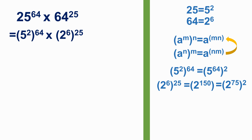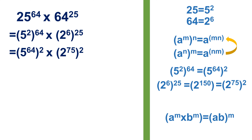Now, we know that a to the power m times b to the power m can be written as (ab) to the power m, from the law of indices. Therefore, we can write our expression as 5 to the power 64 times 2 to the power 75, whole squared. Now to get n, which is the square root of this number, we simply remove the square from the power.